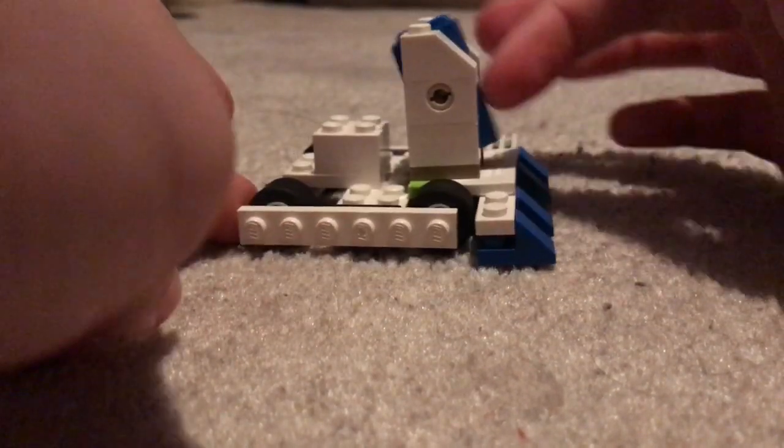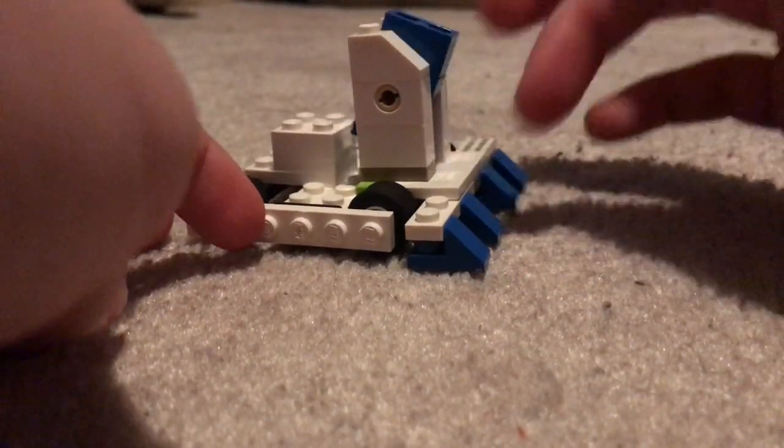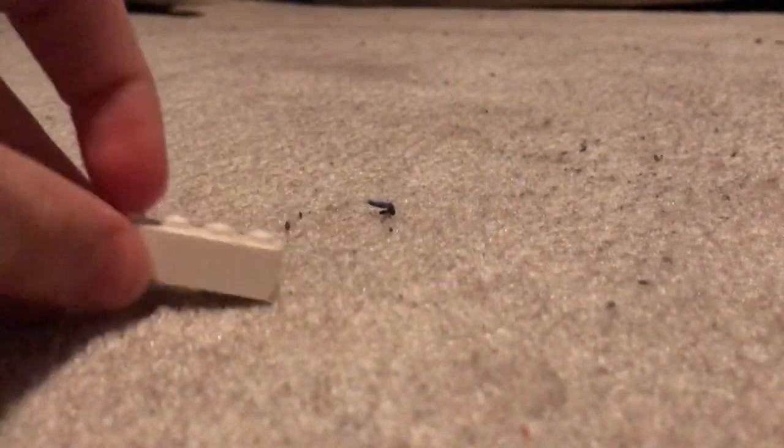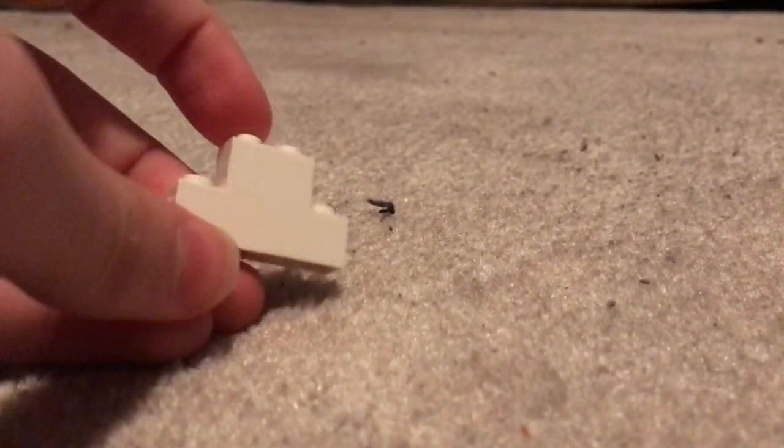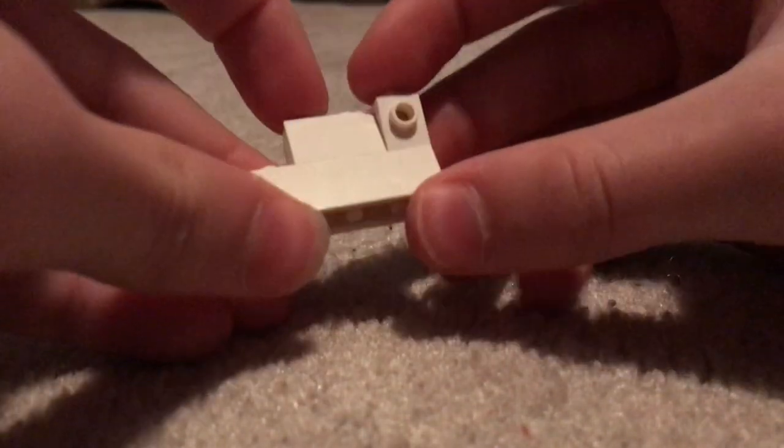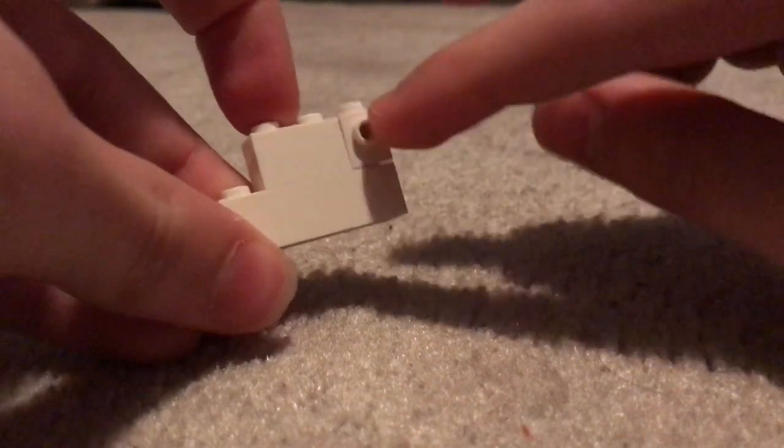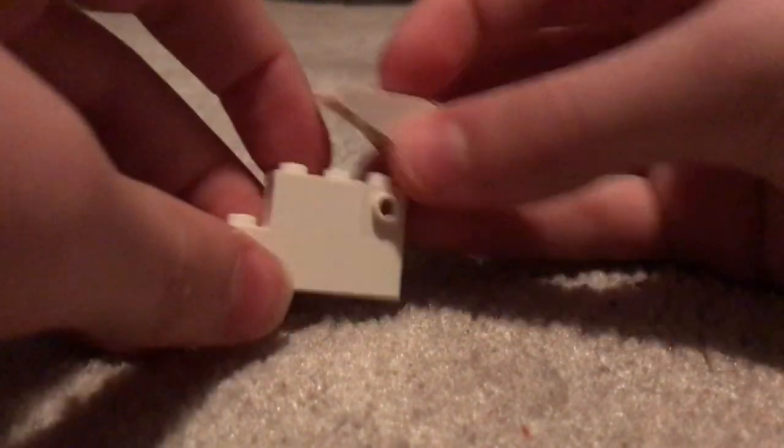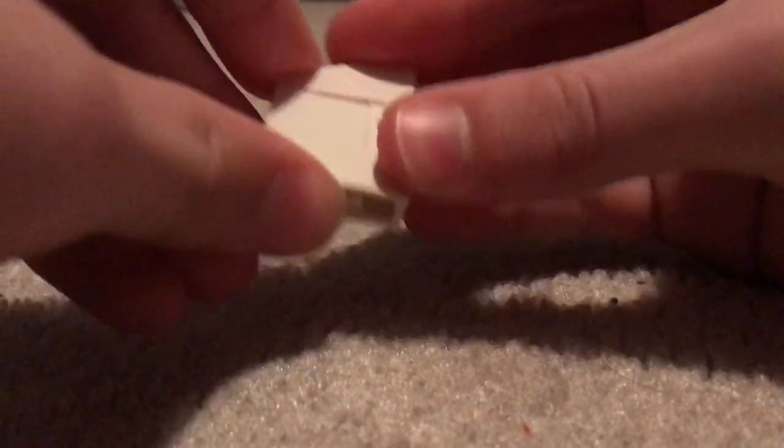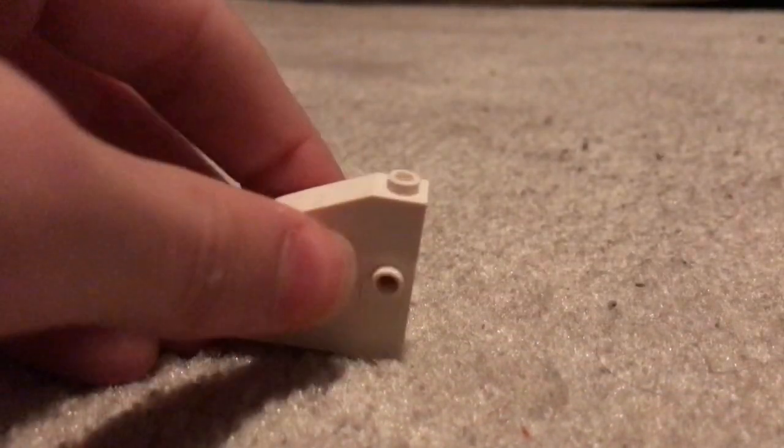And now we're almost done. Next you take a piece like this, attach a two wide one here, and then one that has like, remember it has to have a little peg on the side. And then you're going to get a sloped white piece like this and you have this.